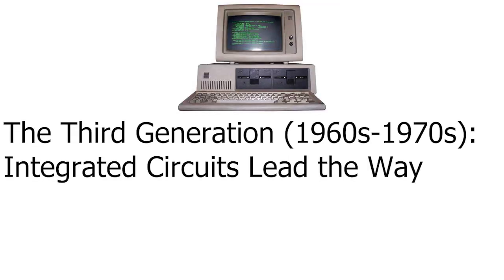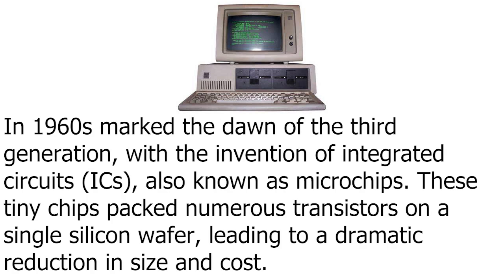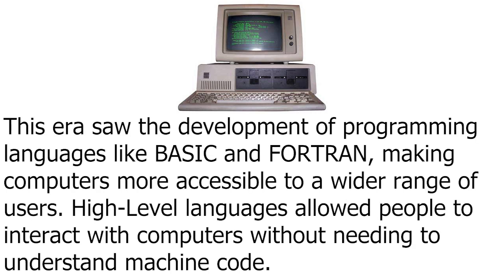The third generation, 1960s to 1970s: integrated circuits lead the way. The 1960s marked the dawn of the third generation with the innovation of integrated circuits, ICs, also known as microchips. These tiny chips packed numerous transistors on a single silicon wafer, leading to a dramatic reduction in size and cost. This era saw the development of programming languages like BASIC and Fortran, making computers more accessible to a wider range of users. High-level languages allowed people to interact with computers without needing to understand machine code.